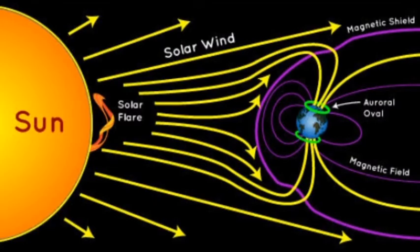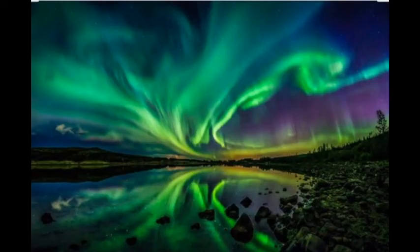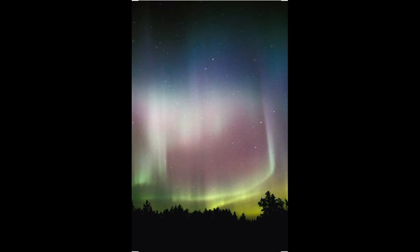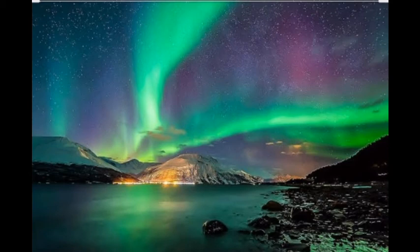Charged particles in the magnetosphere are affected by the Earth's magnetic field and create beautiful northern and southern lights called auroras. These auroras occur in the thermosphere and exosphere. When electrically charged particles from the sun collide with atmospheric oxygen and nitrogen, auroras are formed. If formed near the north pole, they are called the northern lights or aurora borealis; if formed near the south pole, they are called the southern lights or aurora australis.